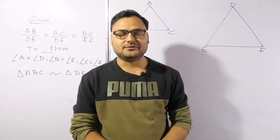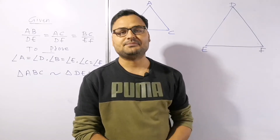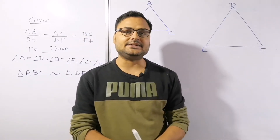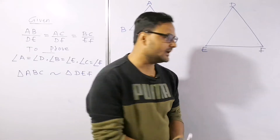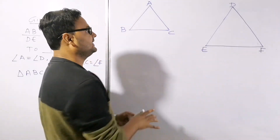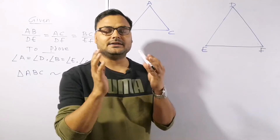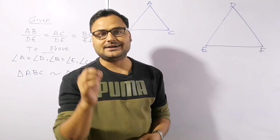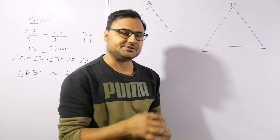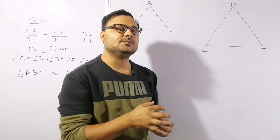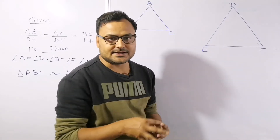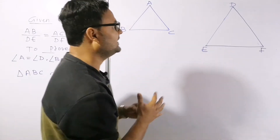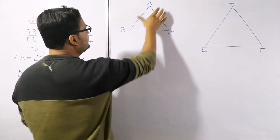Hello and once again welcome to Prakash Academy. Today we are going to do Theorem 6.4 from NCERT Class 10. That theorem says: we have two triangles, and if the corresponding sides of the triangles are in the same proportion, we have to prove that the corresponding angles are equal and hence the triangles are similar.